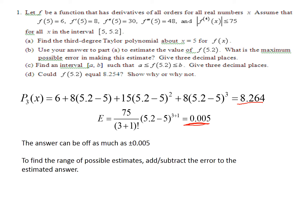So we're going to add or subtract that to the estimated answer. So the way I got that was I did 8.264 minus 0.005, and then I did 8.264 plus 0.005.